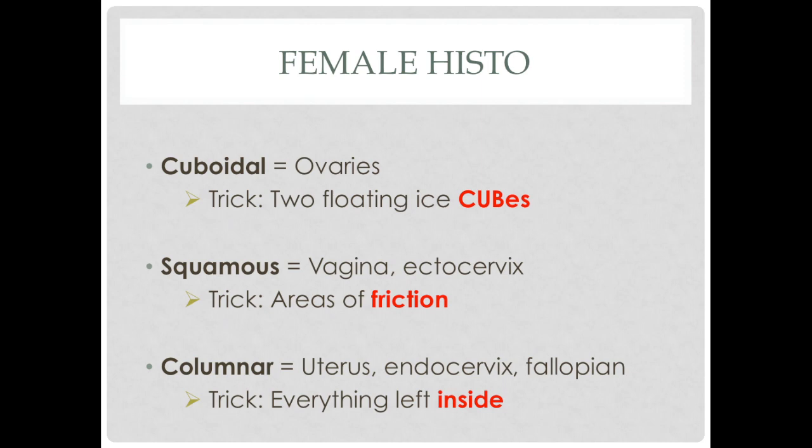For female histology, cuboidal cells line the ovaries — think of two floating ice cubes, those are the ovaries. Squamous cells line the vagina and ectocervix — these are areas of friction during intercourse. Columnar cells line the uterus, endocervix, and fallopian tubes, which is pretty much everything left inside except the ovaries, which are cuboidal.